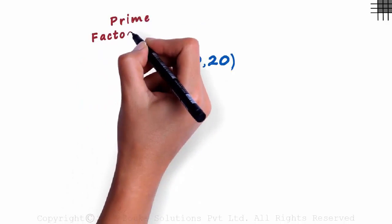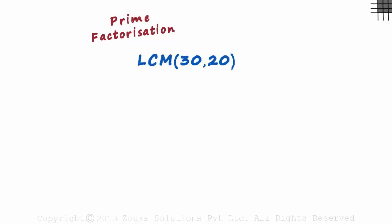Let's try to find the LCM of 30 and 20 using the prime factorization method. As the name says, we need to reduce the number to its prime factors.